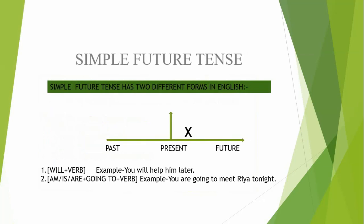Simple future tense has two different forms in English and indicates an action that has not yet begun. The first form is will plus V1 (base form of the verb). Example: 'You will help him later.' The second form is am/is/are plus going to plus verb. Example: 'You are going to meet Rhea tonight.' So simple future tense uses either will+V1 or the present auxiliaries am/is/are plus going to plus verb.